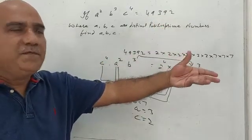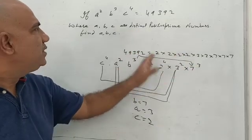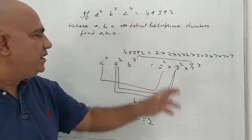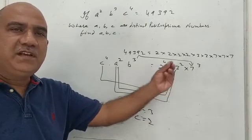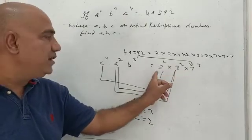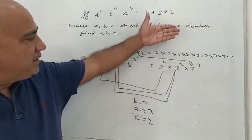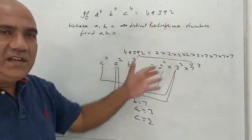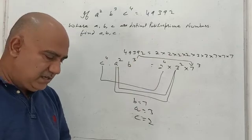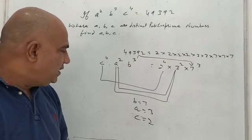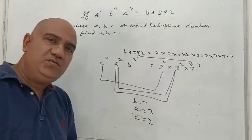The hint here is 'distinct positive prime numbers' — since they are prime numbers, the given quantity must be broken into prime factors. They are different, so a ≠ b ≠ c, and we've seen the primes are 2, 3, and 7. After raising them to the appropriate powers and comparing, we conclude that a = 3, b = 7, and c = 2.